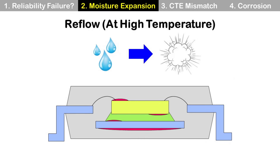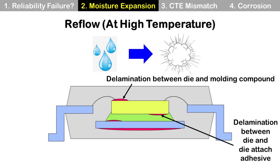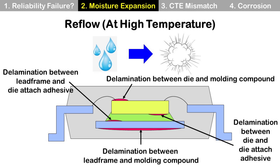During the reflow process at high temperature around 260 degrees C, this liquid state moisture within the package turns into gas state vapor, and the volume is increased by more than 1000 times. This makes delamination at the interface — for example, delamination between die and molding compound, between die and die-attach adhesive, between lead frame and die-attach adhesive, and between lead frame and molding compound.